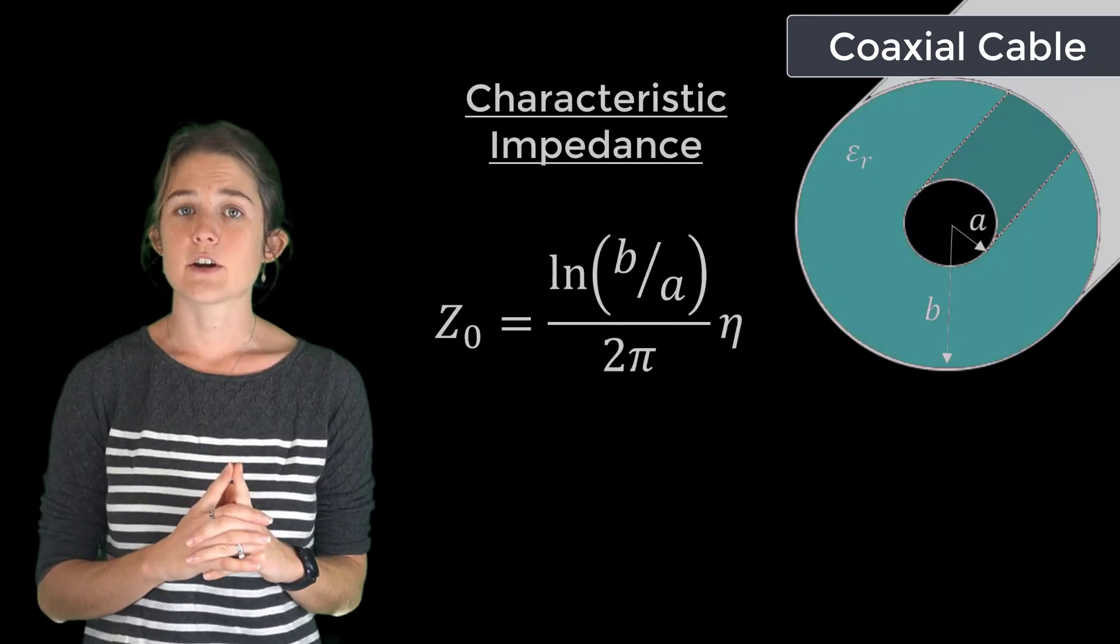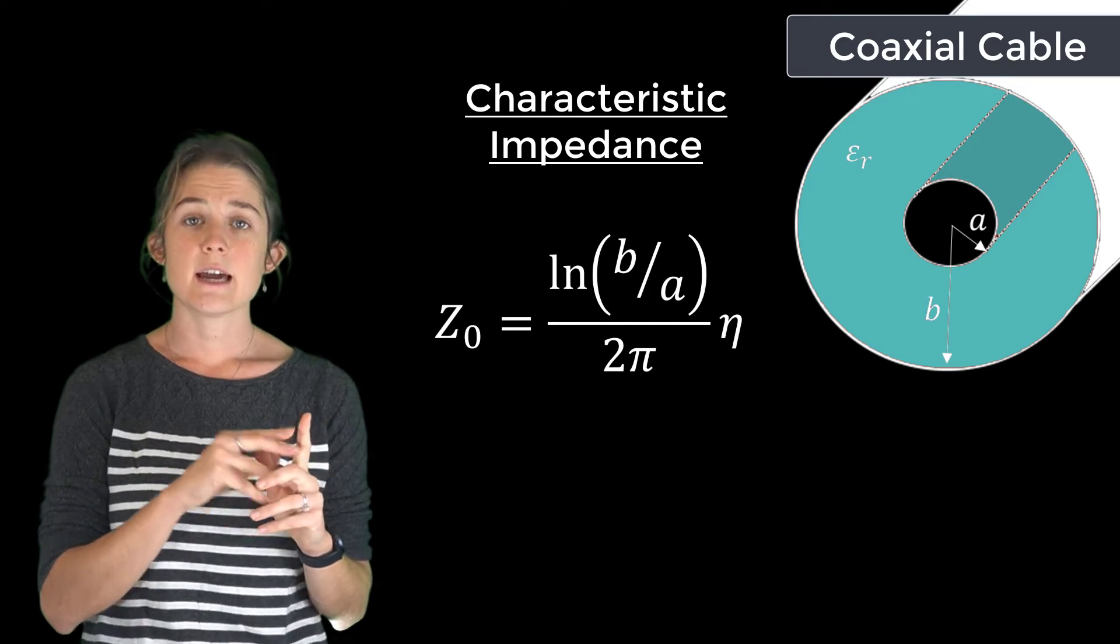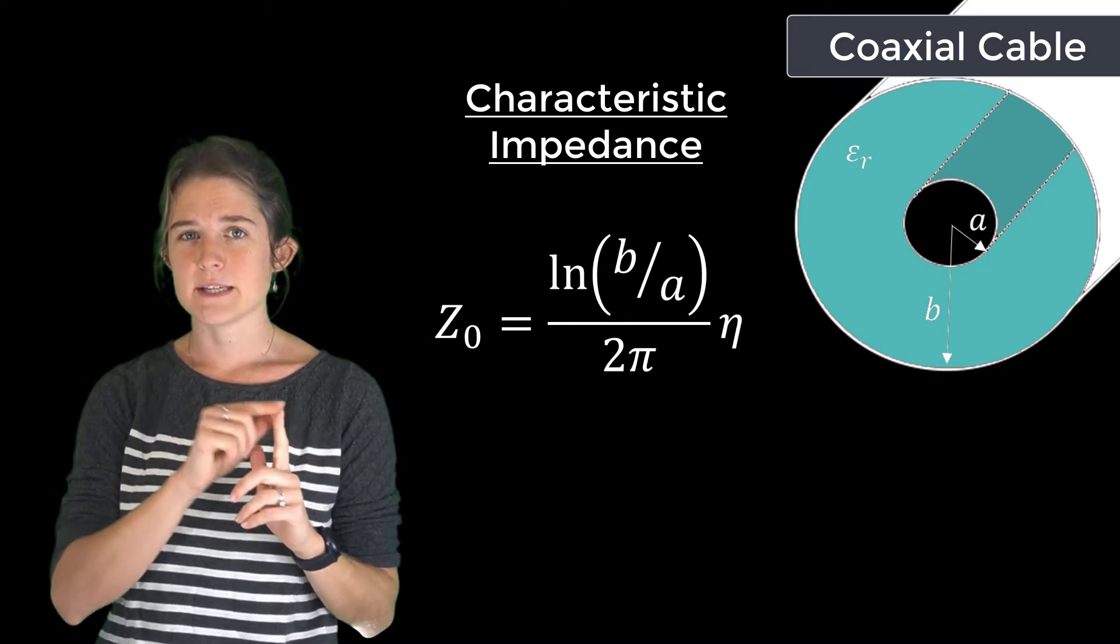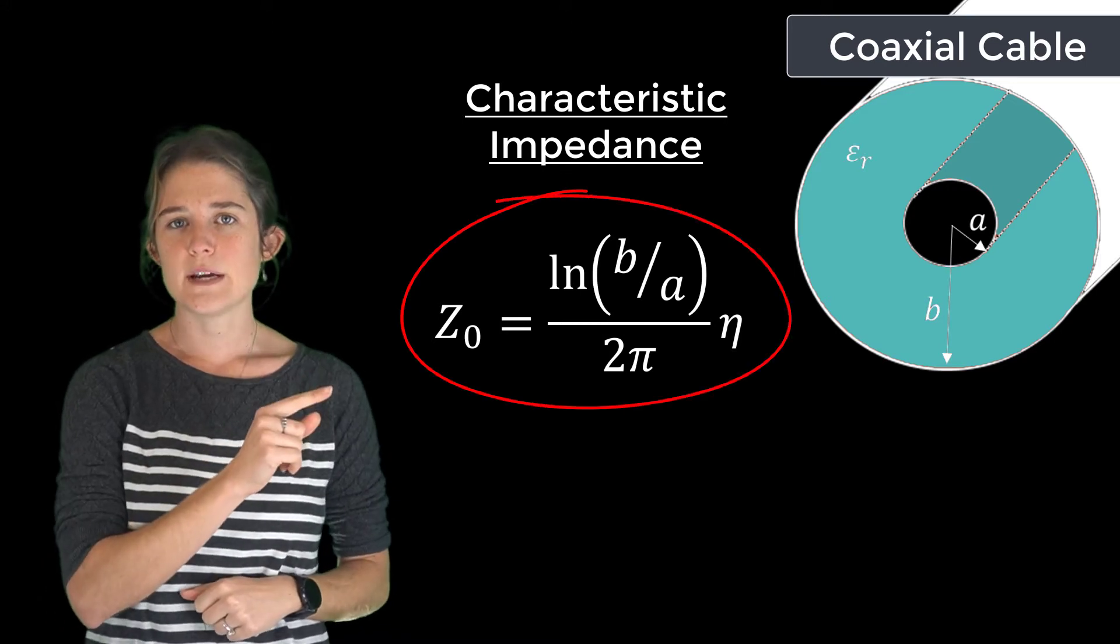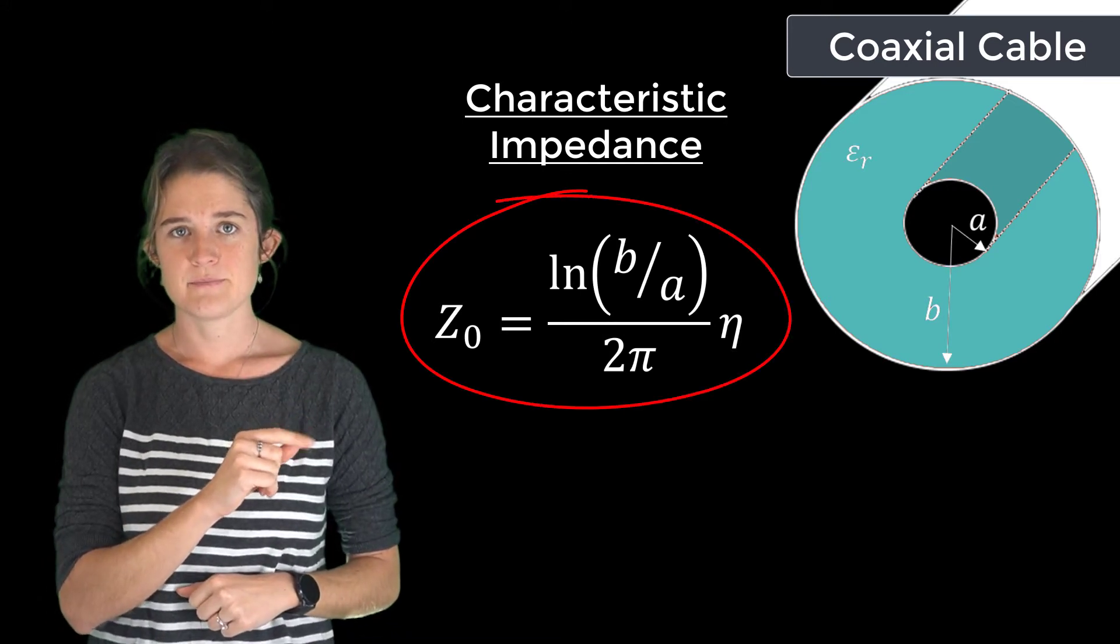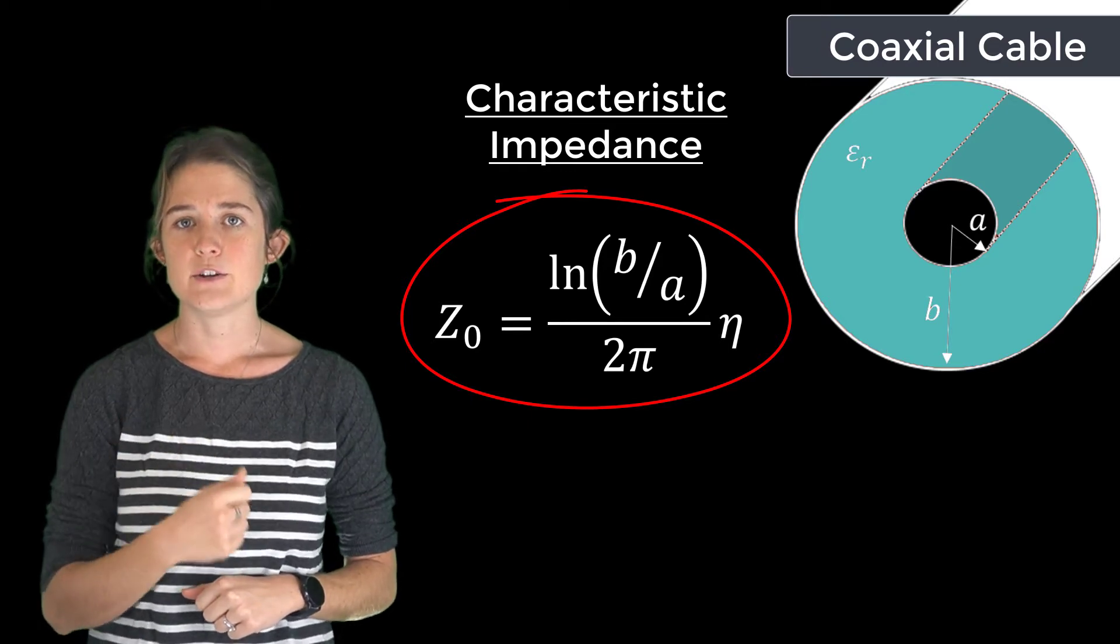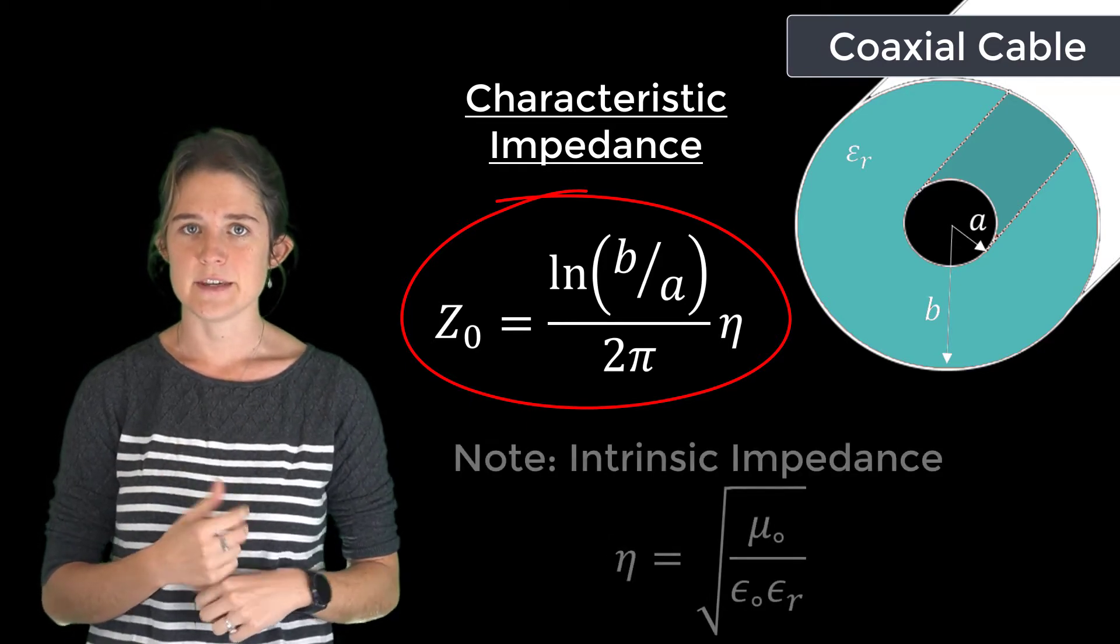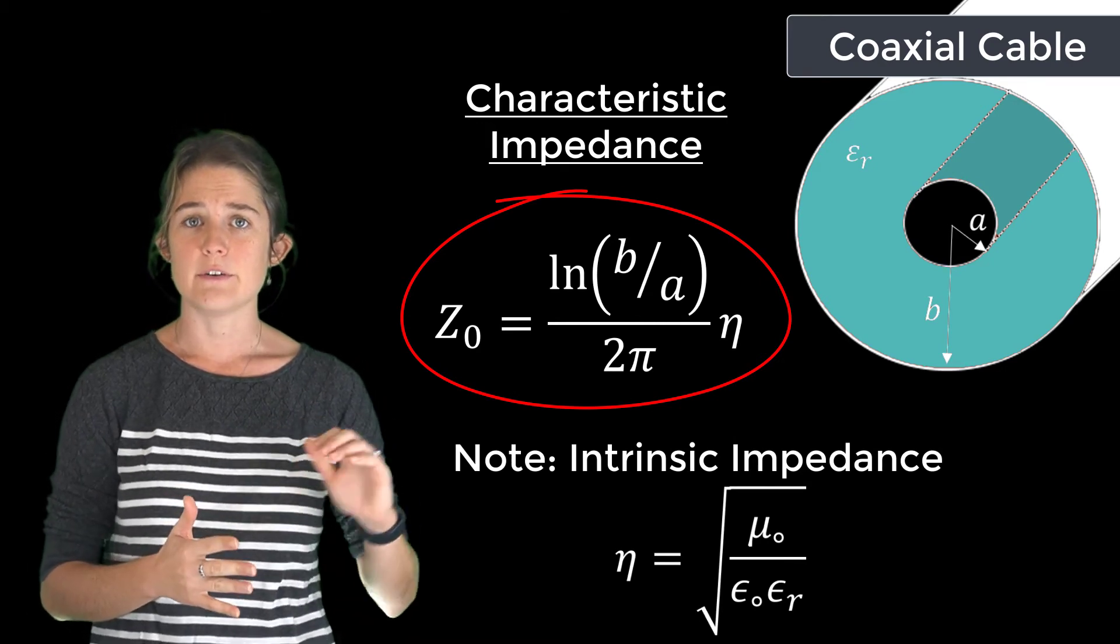The characteristic impedance of a coaxial cable may be calculated from its geometric parameters together with the dielectric response of the material filling the space between the conductors. This is the equation we use: Z₀ equals the natural log of b over a, divided by 2π times η, the intrinsic impedance of the material between the conductors, or the square root of μ over ε.